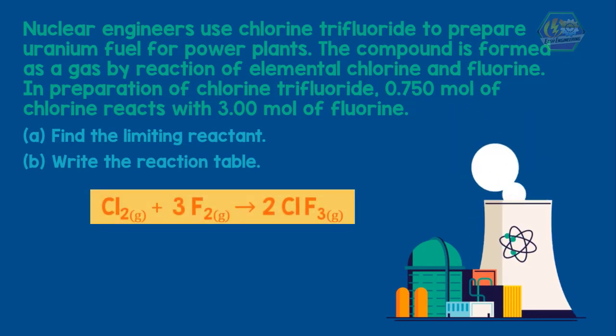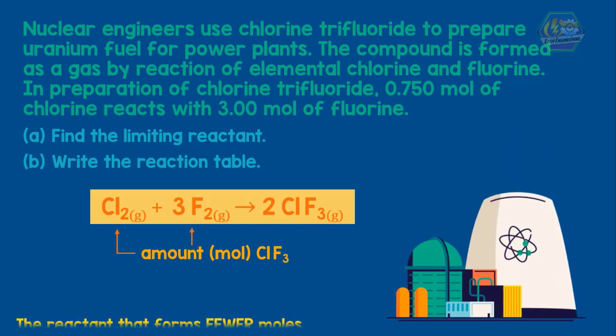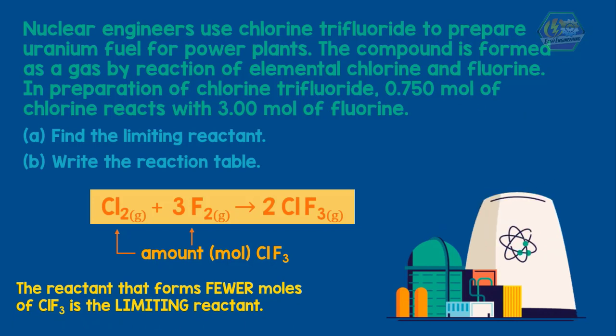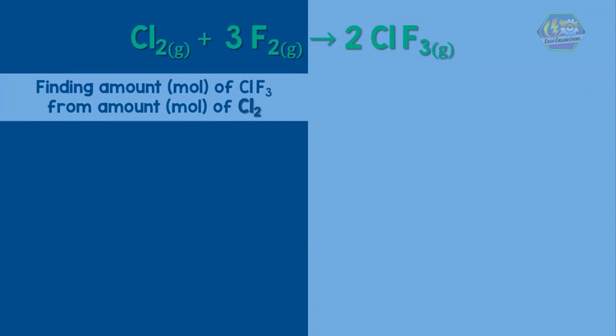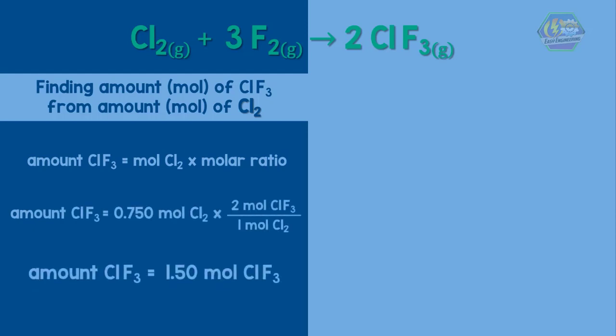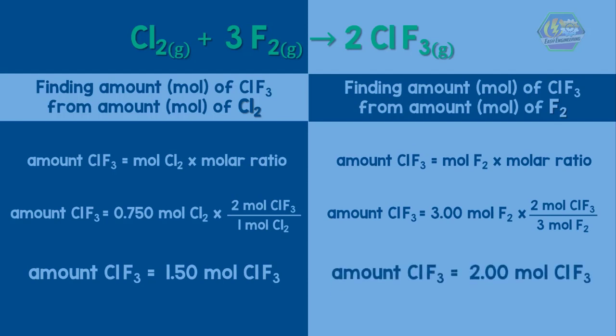So we need to write the balanced equation first. We find the limiting reactant by calculating the amount, mole, of chlorine trifluoride formed from the amount mole of chlorine, and now finding amount mole of chlorine trifluoride for amount mole of fluorine. Hence chlorine is the limiting reactant because it forms fewer moles of chlorine trifluoride.